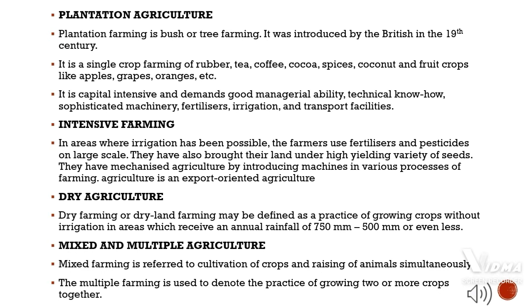Mixed and multiple agriculture: Mixed farming refers to the cultivation of crops and raising of animals simultaneously. Multiple farming is used to denote the practice of growing two or more crops together.